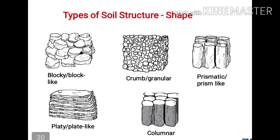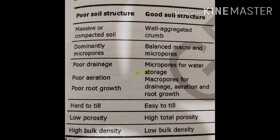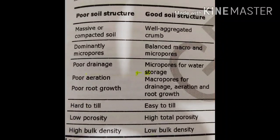Flocculation means the clumping together of soil particles, and it is the inverse of soil dispersion. This picture shows a comparison between soils with good and poor soil structure. Poor soil structure has a massive or compacted soil, while good soil structure is well aggregated and crumb.